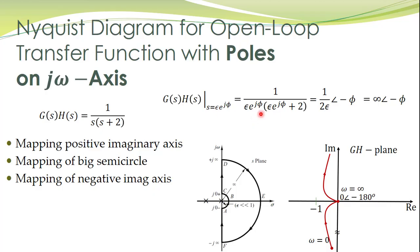Substituting S = ε·e^(jφ) into the transfer function, since epsilon approaches 0 we can ignore the constant term. So we get 1 divided by 2 multiplied by ε·e^(jφ), which becomes 1 divided by 2ε, with phase angle minus φ. So the mapping of this small semicircle has magnitude infinity (since ε→0) and phase angle minus φ.